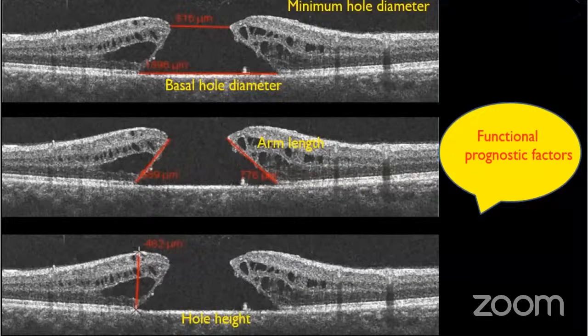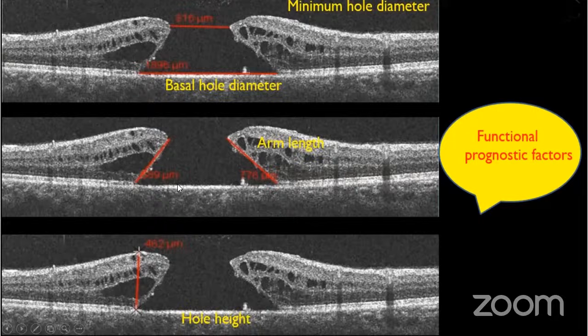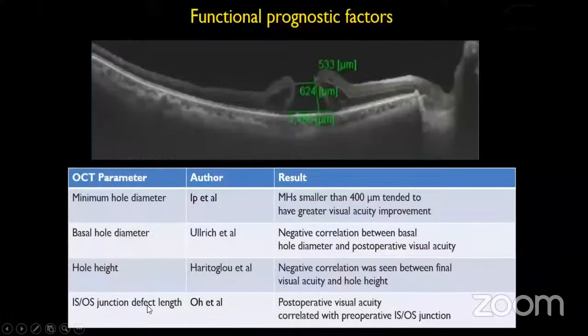In functional prognostic factors: the basal hole diameter, the arm length (distance from RPE to ILM across the arm), and the hole height (from the highest point of the ILM to the RPE). Minimal hole diameter smaller than 400 microns tends to have greater visual acuity improvement. Basal hole diameter has a negative correlation with post-operative visual acuity. Hole height also has a negative correlation. Post-operative visual acuity correlates with pre-operative IS/OS junction defect — if the IS/OS junction is disrupted pre-operatively, we will not get a good visual outcome post-surgery.